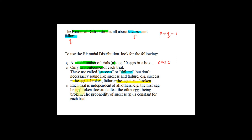The third condition is that each trial is independent of all others. For example, the first egg being broken does not affect the other eggs being broken. In this case, the probability of success — that is, the egg being broken — is constant for each trial.